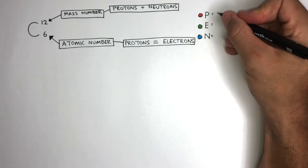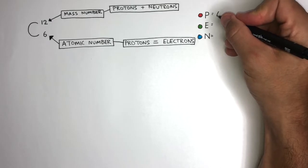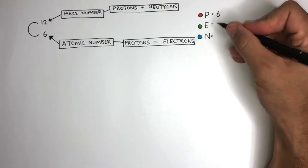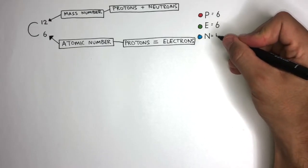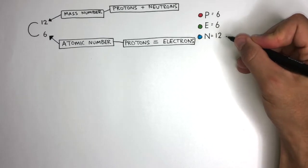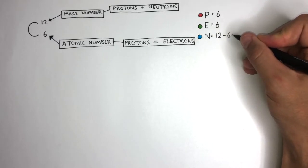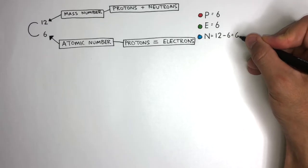Because the atomic number is six, this means there are six protons. This means there will also be six electrons. To calculate the number of neutrons, you do mass number take away atomic number, which means the calculation will be 12 take away 6 equals 6 neutrons.